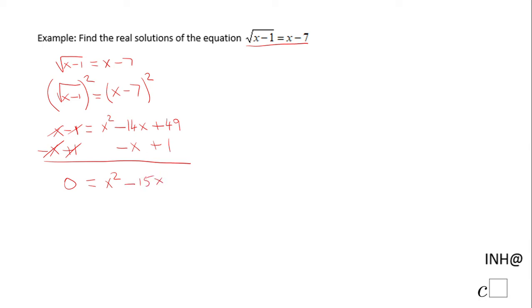We have negative 14x minus x plus 50. Now we're looking for two numbers whose product is 50 and sum is negative 15. Factoring will be one way to solve this quadratic.